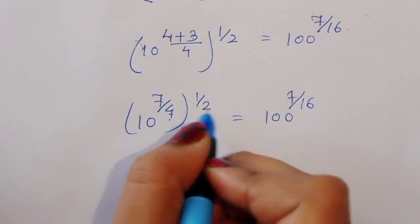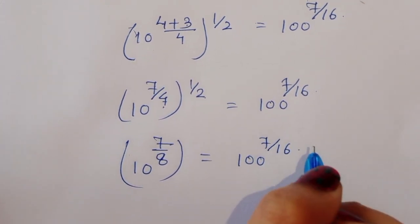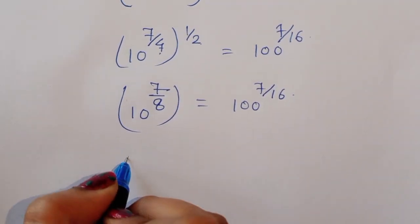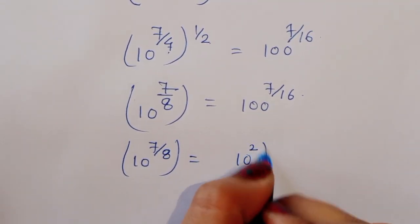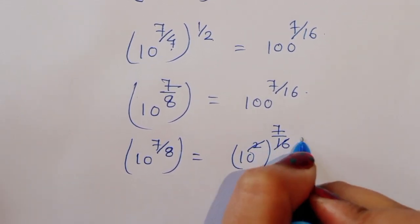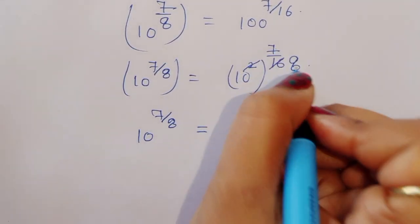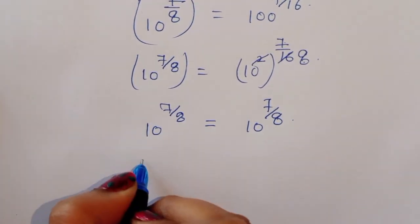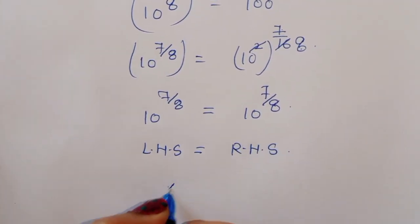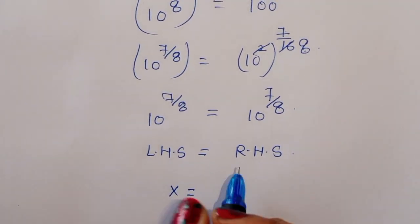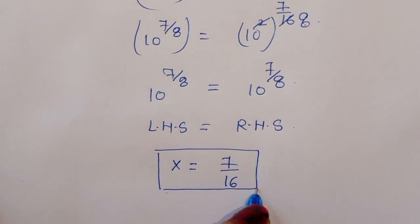Now 10 raised to 7 by 4 times 1 by 2 — taking 7 and 4 times 8 — is equal to 100 raised to 7 upon 16. We can write 10 raised to 7 by 8 is equal to 100 raised to 7 upon 16, which is 10 squared raised to 7 upon 16, giving 10 raised to 7 by 8 is equal to 10 raised to 7 by 8. LHS equals RHS, so the value of x is equal to 7 upon 16. This is the correct solution. Thank you.